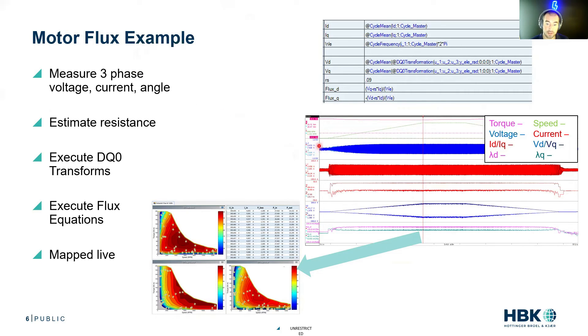We're measuring three-phase voltages in blue, three-phase currents in red, and then angle is actually kind of cooked into our speed, but we're measuring angle as well. So we have our torque, our speed, our voltages, and our currents. These are kind of our direct measurements.